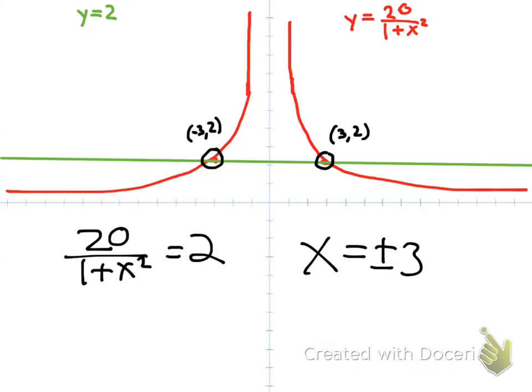So notice how those are the coordinates here, 3 and negative 3. And then, you'd find the corresponding output for each, for the values at the points where they intersect. So, that's just giving you a visual idea of how to approach this.